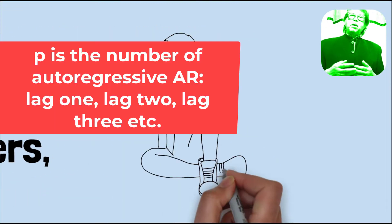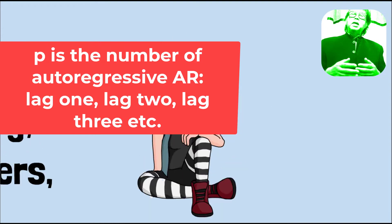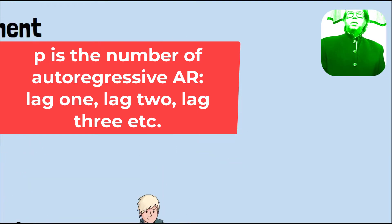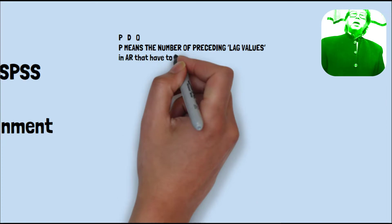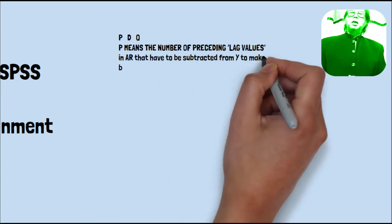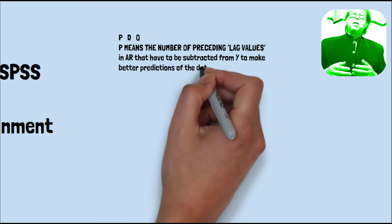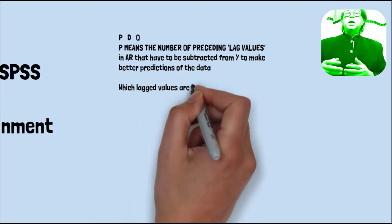The first one is P. P mentions the number of preceding lag values in autoregressive or AR that have to be subtracted from Y to make better prediction of the data. For example, which lag values are better?